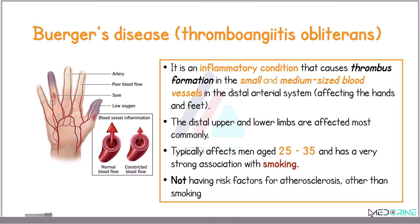Buerger's disease most commonly affects men between the age of 25 and 35 years old and is strongly associated with tobacco use. In fact, it often occurs in individuals without typical risk factors for atherosclerosis, other than smoking.